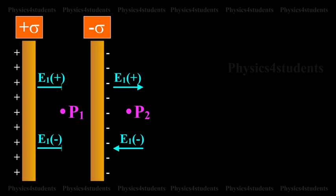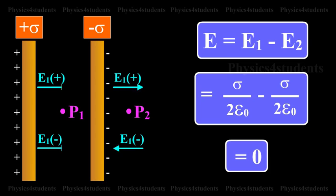At a point P2 outside the sheets, the electric field will be equal in magnitude and opposite in direction. The resultant field at P2 is E is equal to E1 minus E2, is equal to sigma divided by 2 epsilon naught minus sigma divided by 2 epsilon naught, is equal to 0.